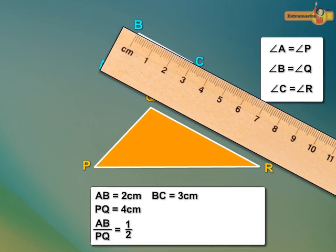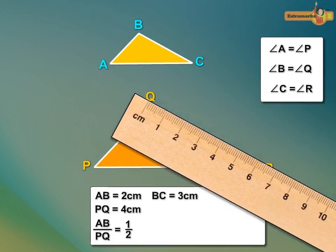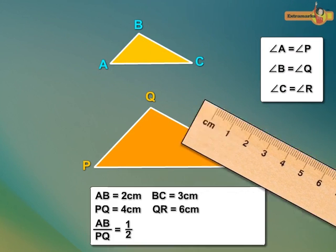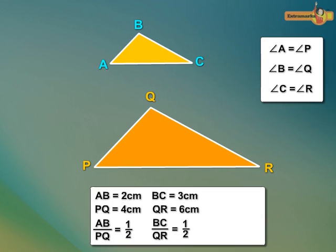BC is equal to 3 centimeters, and QR is equal to 6 centimeters. Therefore, BC upon QR is equal to 1 upon 2.